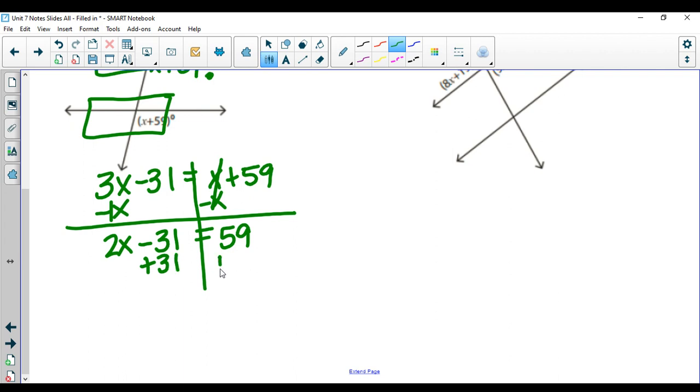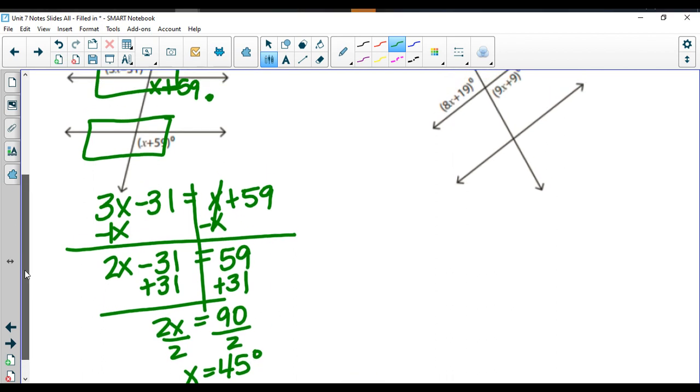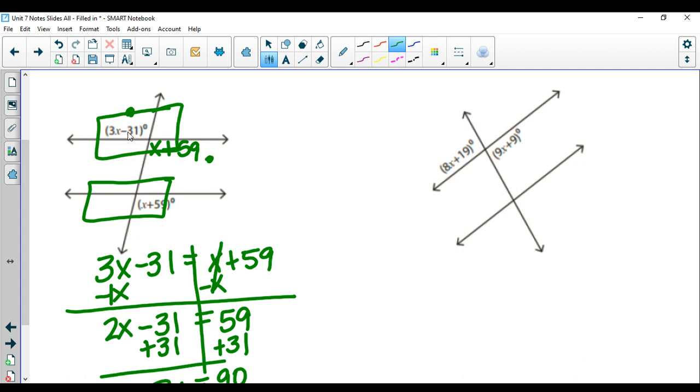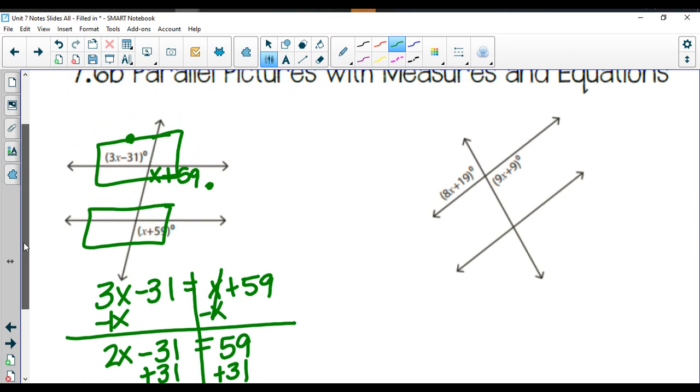I'm going to add 31 to both sides. So I get 2x is equal to 90. And I'm going to divide through by 2, which will leave me with x equals 45 degrees. You can of course go back and actually plug that in, and then what you should see is that those two angles should end up being equal to each other.